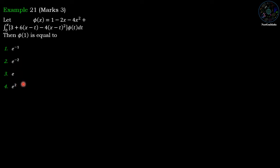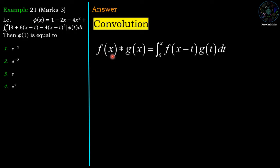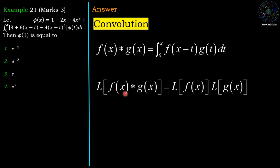We have to solve this integral equation. First we recall the convolution operation: f(x) * g(x) = integration from 0 to x of f(x-t) g(t) dt, and its Laplace property: Laplace of f(x)*g(x) = Laplace of f(x) into Laplace of g(x). Comparing, the integration is similar to the convolution integral, where g(t) = phi(t).